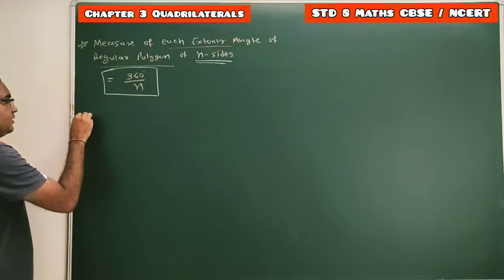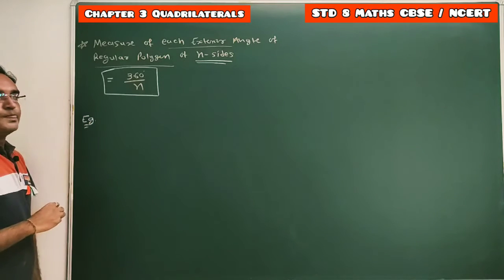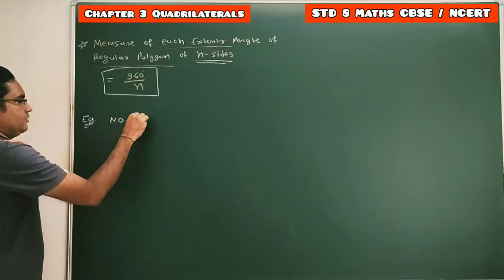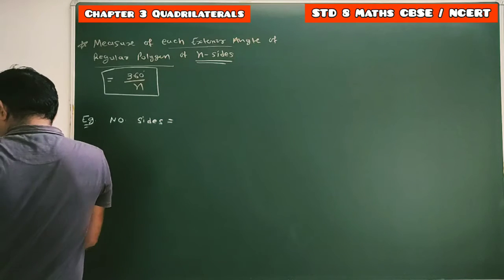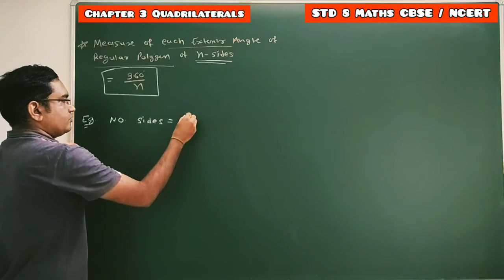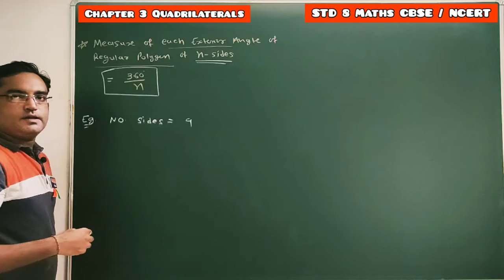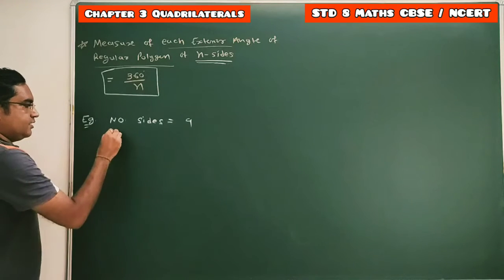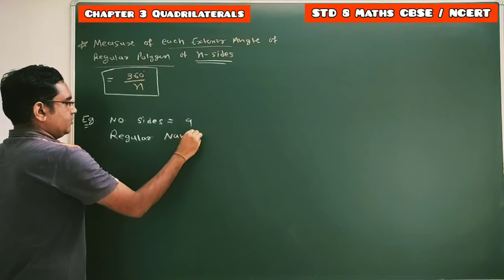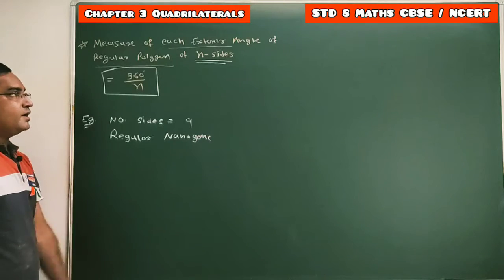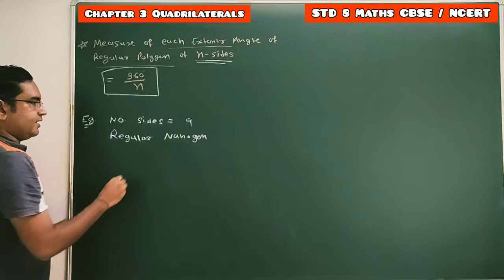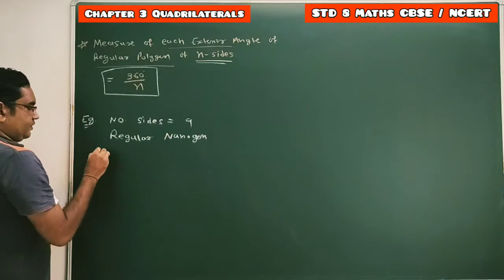Let's understand this using an example. Find the measure of each exterior angle of a polygon where the number of sides is nine. With nine total sides, we have a regular nonagon. So for this regular nonagon, we have to find the measure of each exterior angle.